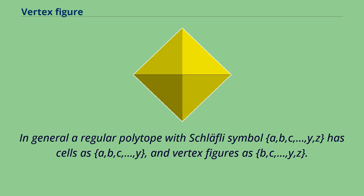In general, a regular polytope with Schläfli symbol {a,b,c,...,y,z} has cells as {a,b,c,...,y} and vertex figures as {b,c,...,y,z}.